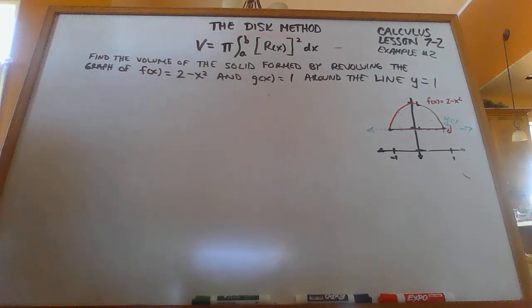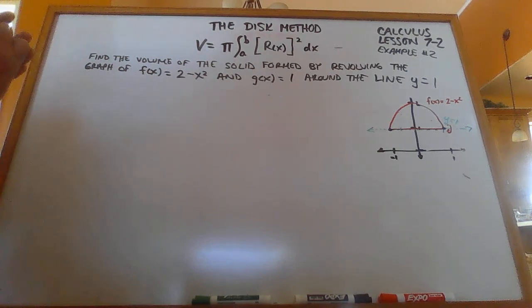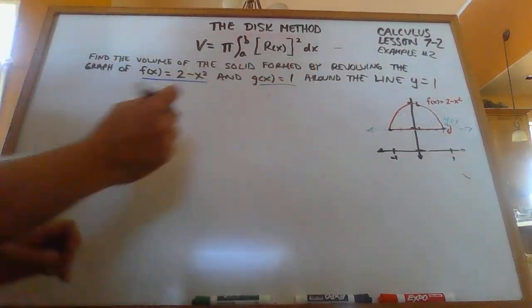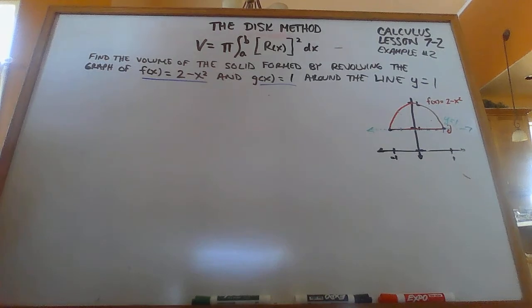Okay, here's our second example of the disk method today. So find the volume of the solid formed by revolving the graph of f(x) equals 2 minus x squared and g(x) equals 1 around the line y equals 1.